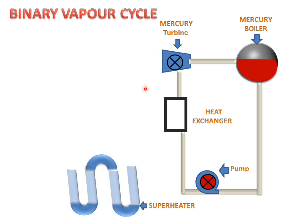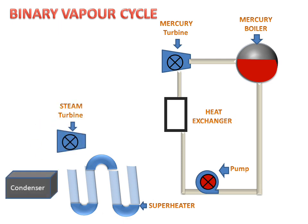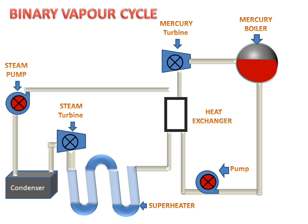In the second cycle we have the following parts: a super heater, a turbine, a condenser, and a steam pump. All of these are connected with the help of pipes.